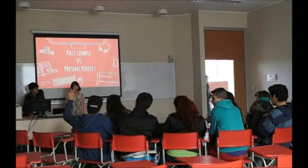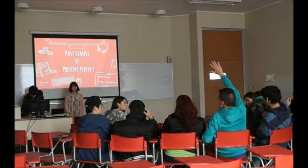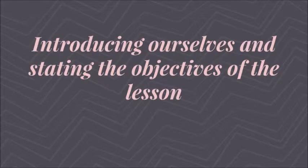The first thing we did to begin our class was to call the roll to know who was present in the classroom, because at least at the beginning of the lesson, we didn't expect students to participate voluntarily. Then we introduced ourselves and presented the class objectives in simple language so the students would know what was expected of them. The class objectives were written on the whiteboard in order to help them focus on accomplishing them.